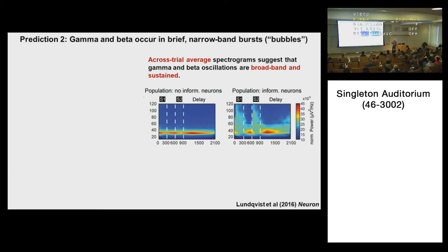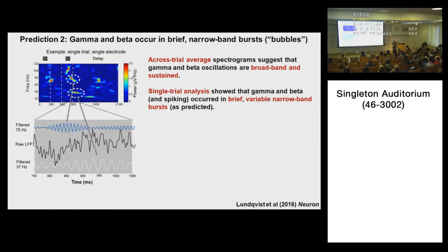Another prediction of the model is that gamma and beta occur in brief narrowband bursts. When you average across trials, you see what looks like continuous beta and continuous spiking — but that is an artifact of averaging. If you look at individual trials in real time, you see a very different picture: short, brief bursts of both gamma and beta oscillations. On a single trial, with frequency on the y-axis and time on the x-axis, we see a bunch of short-duration narrowband gamma bursts and a couple of beta bursts. The spiking is doing the same thing — it's largely taking place during the short, brief gamma bursts in a very sparse way.